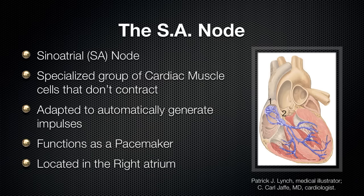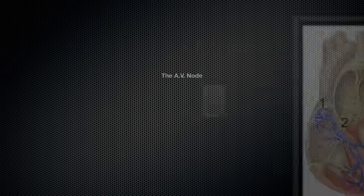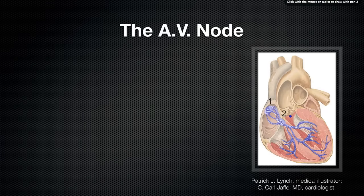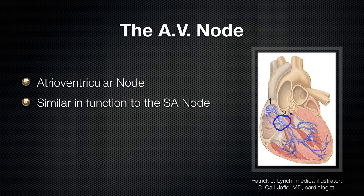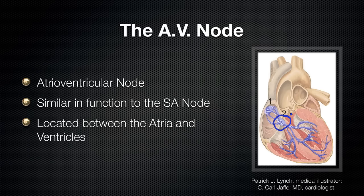So now let's talk about the AV node. The AV node is number 2 — this cluster of cells here — and it stands for the atrioventricular node. It is similar in function to the SA node in that it automatically generates impulses, and it is located between the atria and the ventricles.